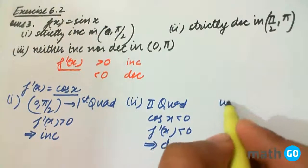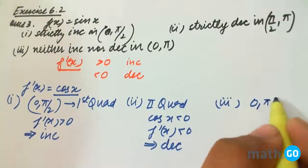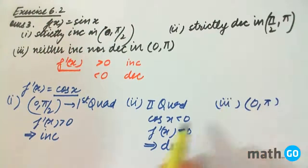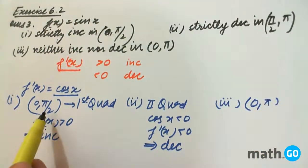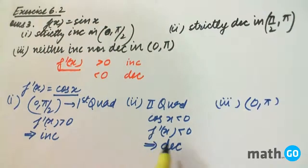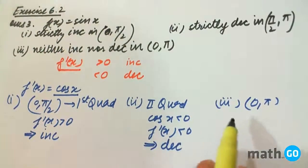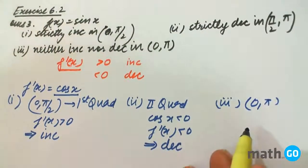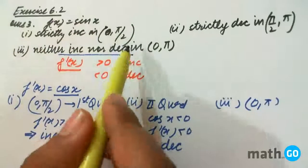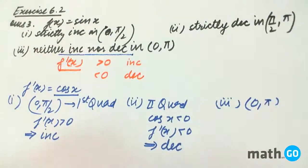And if we consider 0 to π, from 0 to π/2 it is increasing, and for the second half it is decreasing. So we cannot say if it is increasing or decreasing. Therefore, it is neither increasing nor decreasing in this interval.